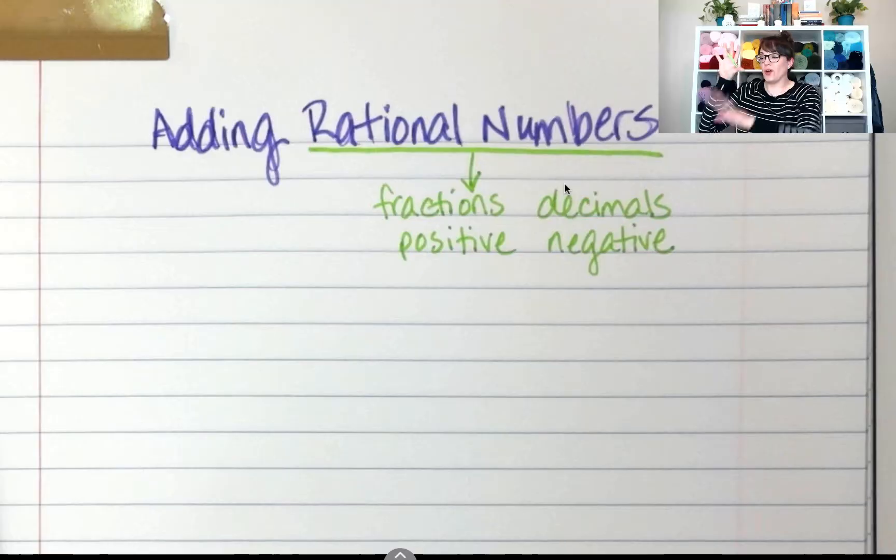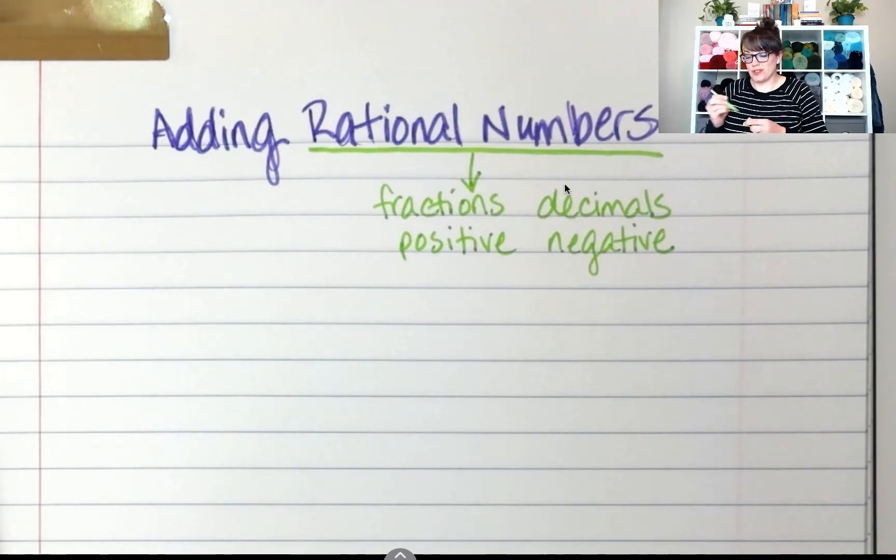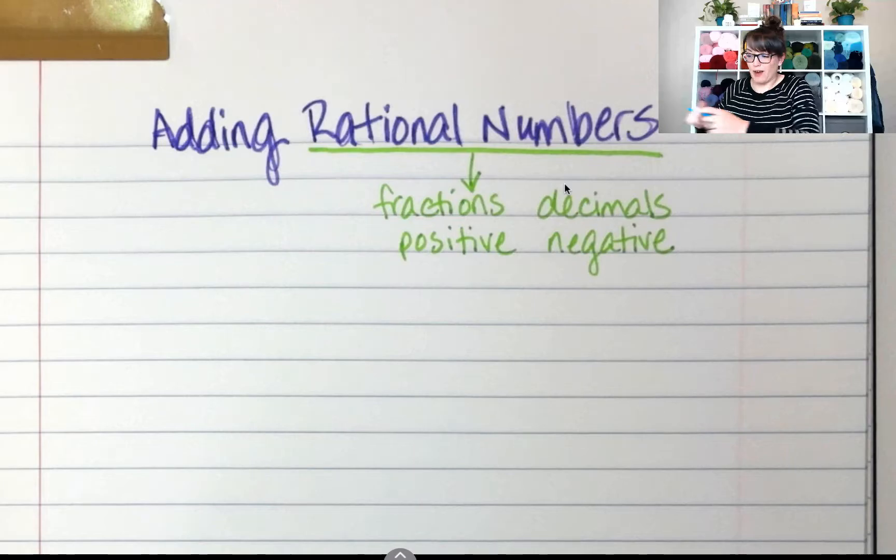So you've added decimals. You've added fractions. But what if one of them is negative? Then what do you do? The rules are basically the same for integers like they are for rational numbers. So we're going to do the same thing, but tweak it just a little bit. First, we're going to talk about decimals.